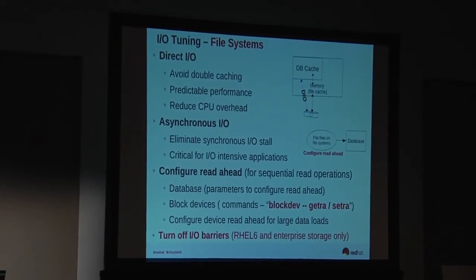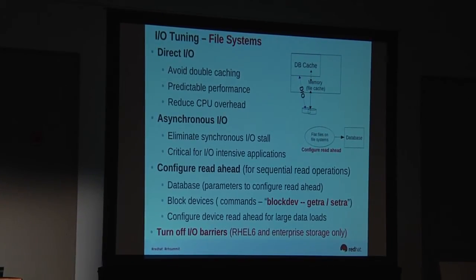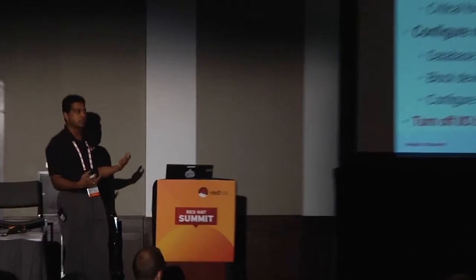Moving to file system tuning: most databases support direct I/O and asynchronous I/O. Use direct I/O to avoid double caching — you don't want your database cache and that data also sitting in system memory. Beyond performance concerns, if the system crashes with buffered I/O, data in-flight may not get written to disk, requiring transaction replay. With direct I/O, the log gets written, so recovery is cleaner. Just by enabling both direct I/O and async I/O together, we get the best performance.